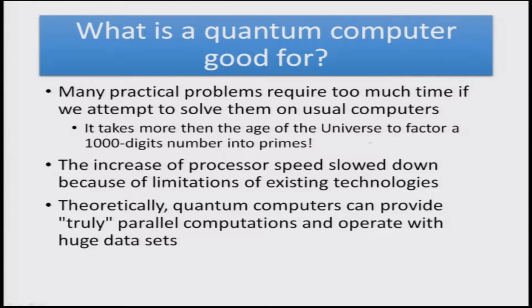There can be problems which can take the age of the universe — for example, the factorization of 1000-digit numbers into primes. Certain problems definitely require this particular kind of radical computational ideas which will make almost impossible problems into soluble ones. With conventional computers, the increase of processor speed has slowed down because of the limitations of existing technologies, and beyond a certain point these limitations become bigger. So there has been a drive towards going to these principles.